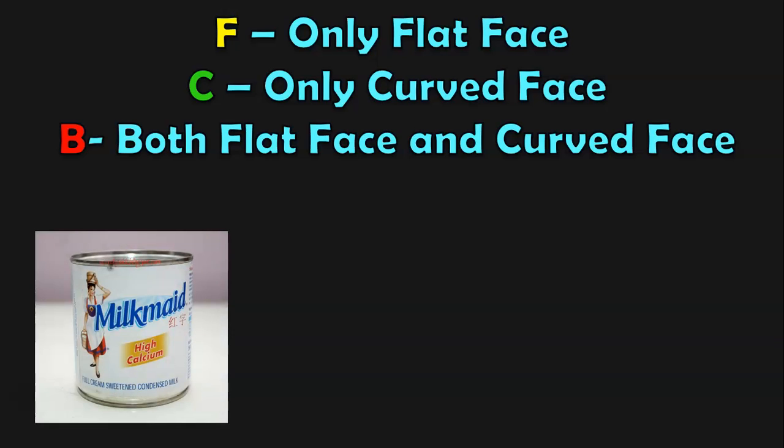What is this? This is a milk tin. Does it have both flat and curved face? Yes, the top and bottom are flat faces, and the remaining portion of it is a curved face. So what alphabet should we use here? B, because it has both flat face and curved face.